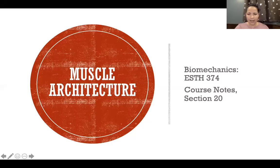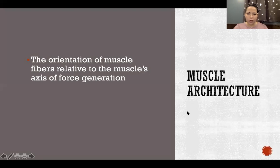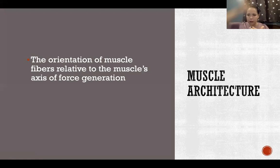In this video we're going to talk about muscle architecture. Muscle architecture refers to the orientation of muscle fibers relative to the muscle's axis of force generation — essentially the straight line we could draw between its attachments. So relative to that line between the attachments, what is the orientation of the muscle fibers?